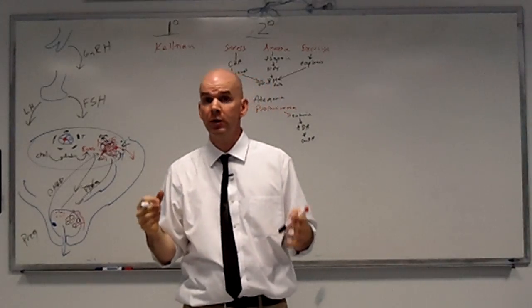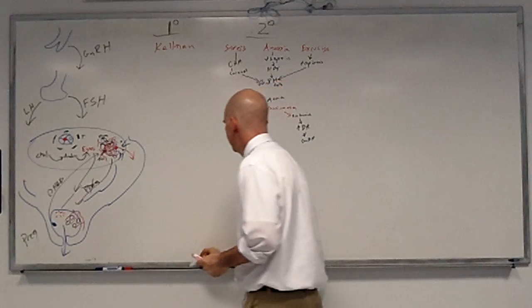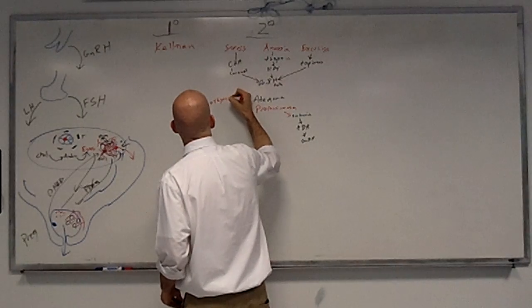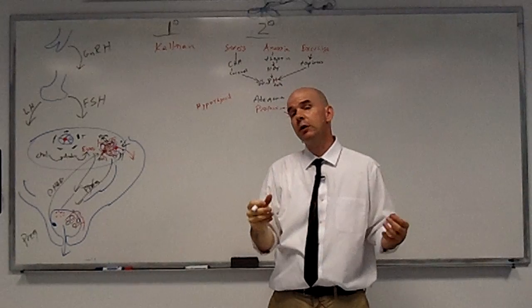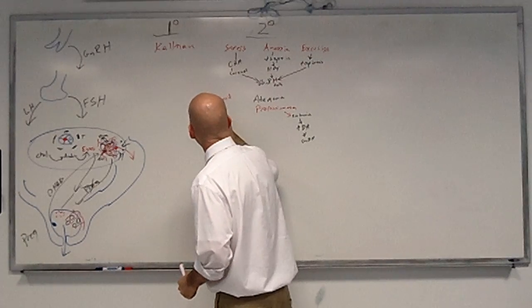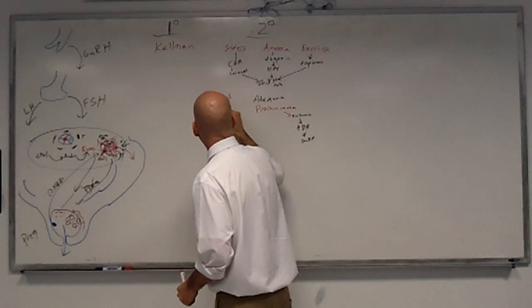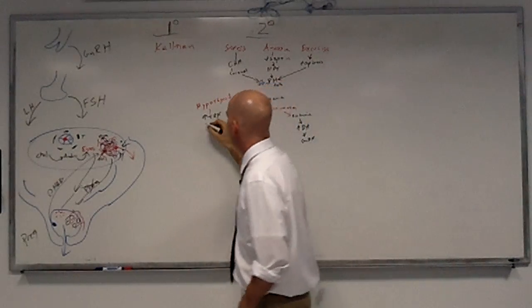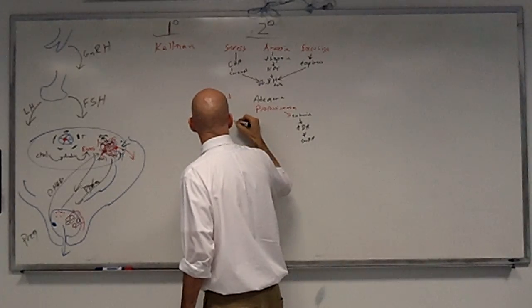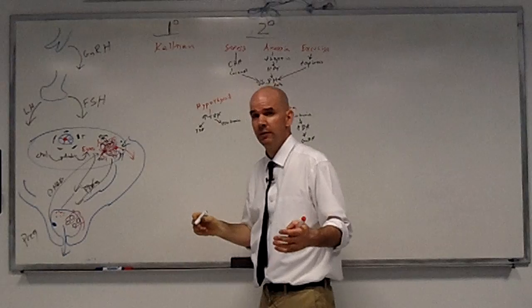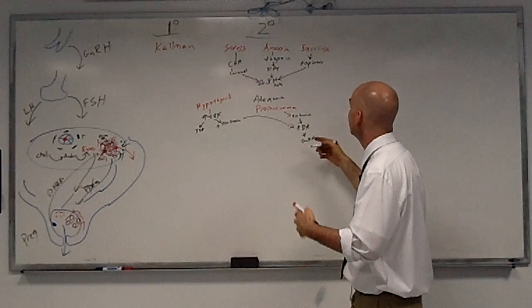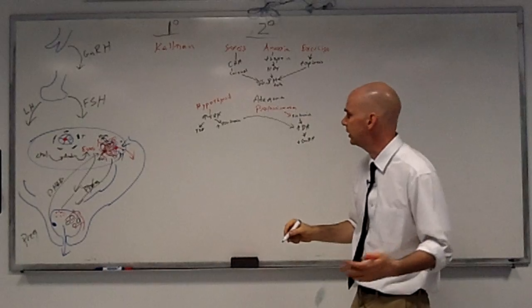Another pituitary cause of amenorrhea is a little bit more indirect. And what I'm talking about here is hypothyroidism. So when the thyroid gland puts out less thyroxin, then this causes an increase in TRH to try to make up for this decrease in thyroxin. An increased TRH causes an increase in TSH. And it also causes an increase in prolactin. And as we've just established, increased prolactin causes an increase in dopamine. So again, you end up with decreased GnRH pulsatility.